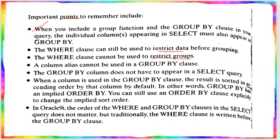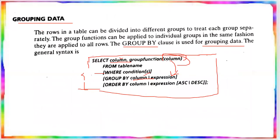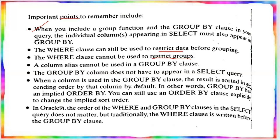The WHERE clause is applied to individual rows, not a collection of rows. A column alias cannot be used in the GROUP BY clause. Also, the GROUP BY column does not have to appear in the SELECT query, but when a column is used in the GROUP BY clause, the result is sorted in ascending order by that column by default.